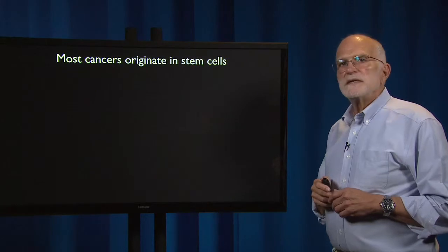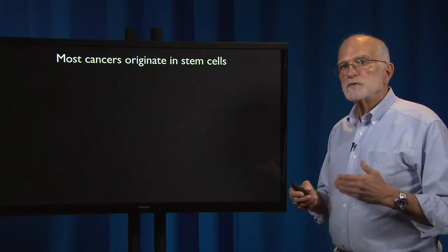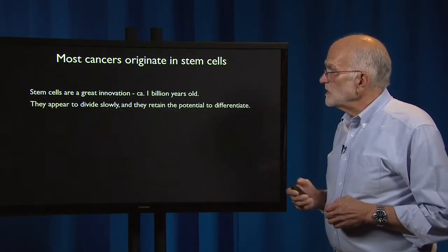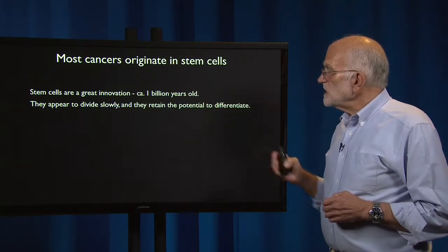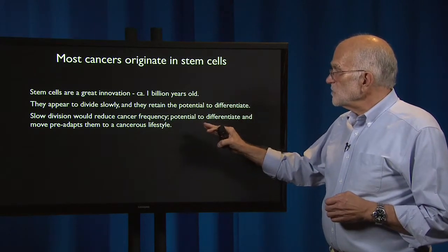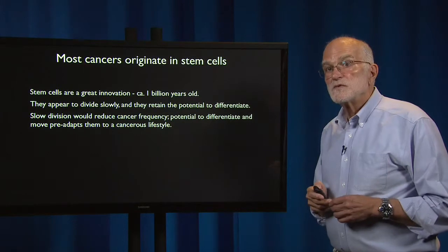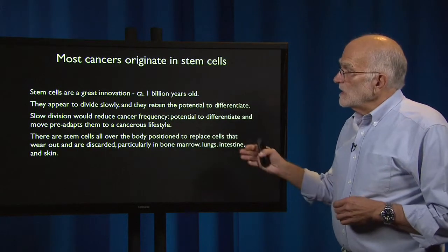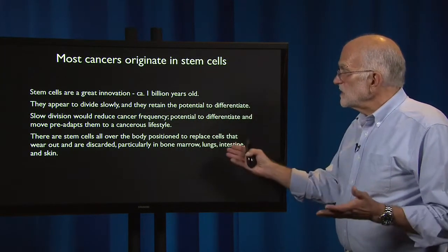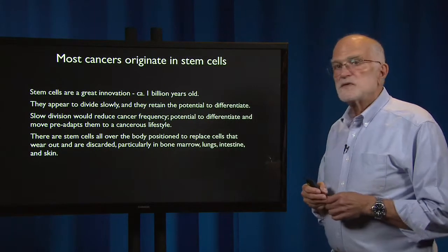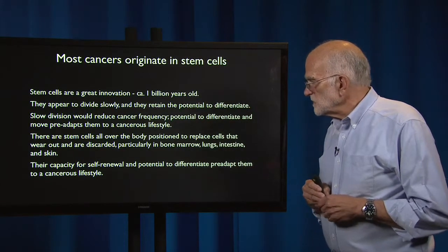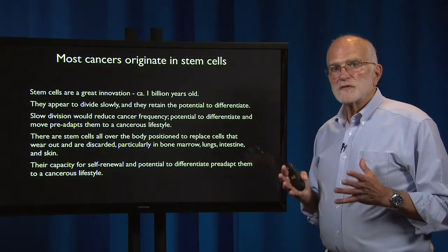Most cancers originate in stem cells. Stem cells arose with multicellularity — they're a great innovation, about a billion years old. They appear to divide slowly and retain the potential to differentiate. Slow division would reduce cancer frequency, but the potential to differentiate and to move pre-adapts them to a cancerous lifestyle. They are positioned all over the body to replace cells that wear out and are discarded — particularly in bone marrow, lungs, intestine, and skin, in the epithelia. Their capacity for self-renewal and potential to differentiate pre-adapt them to a cancerous lifestyle.